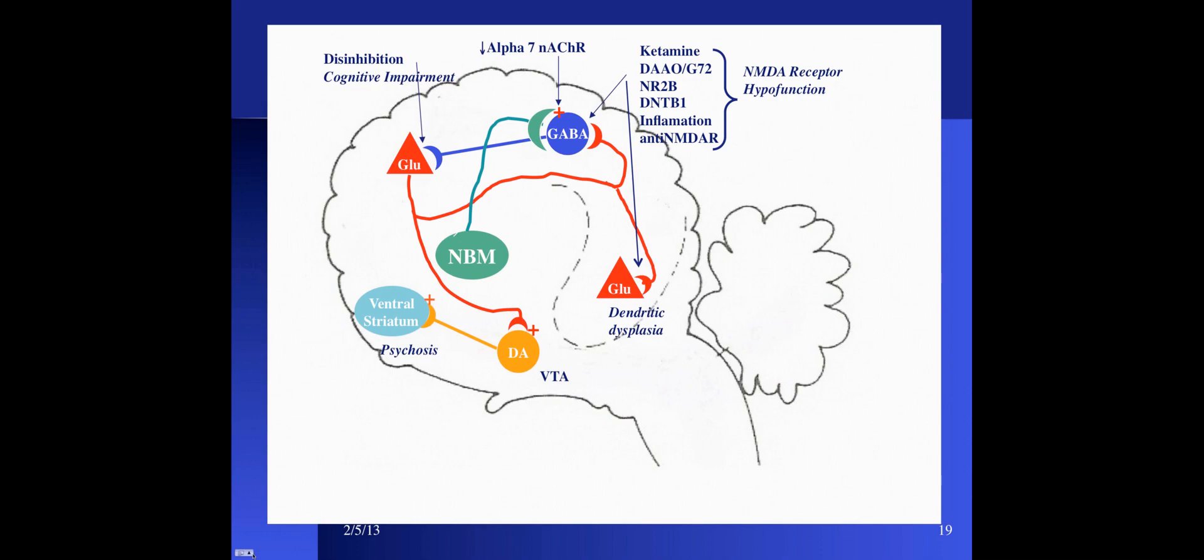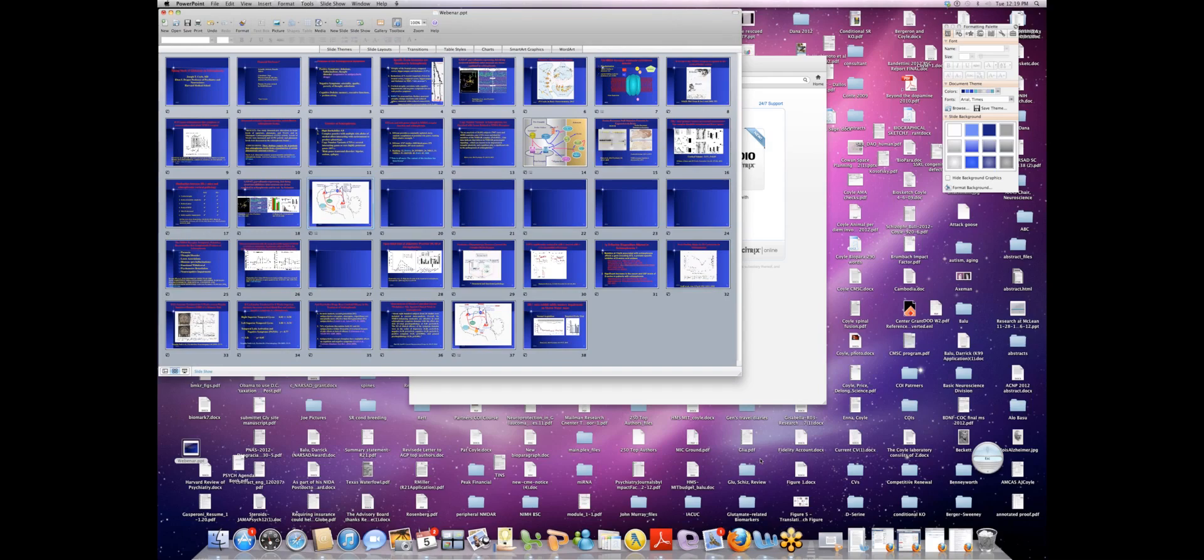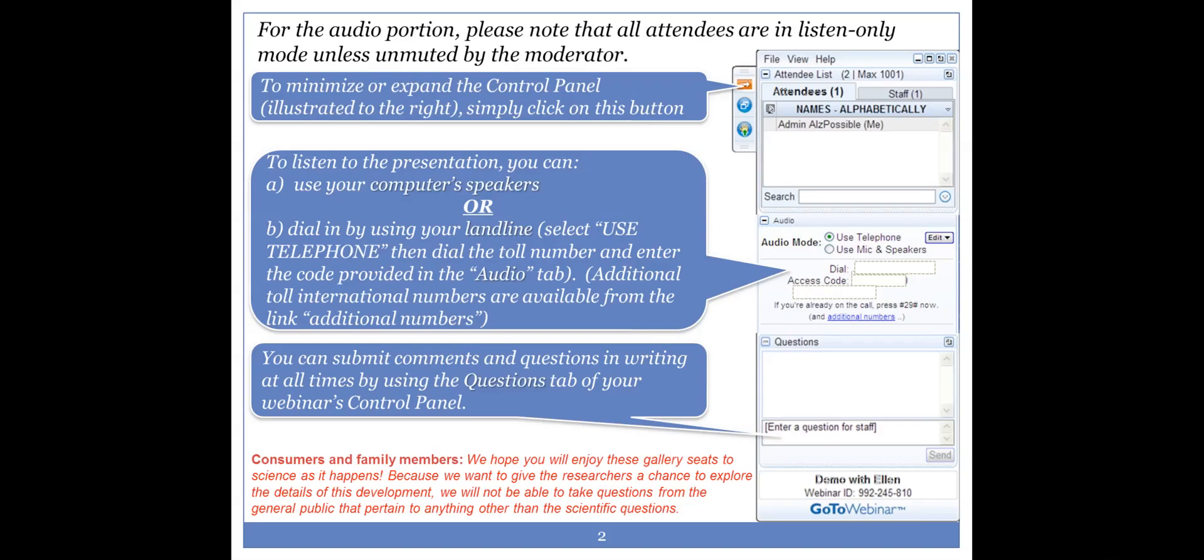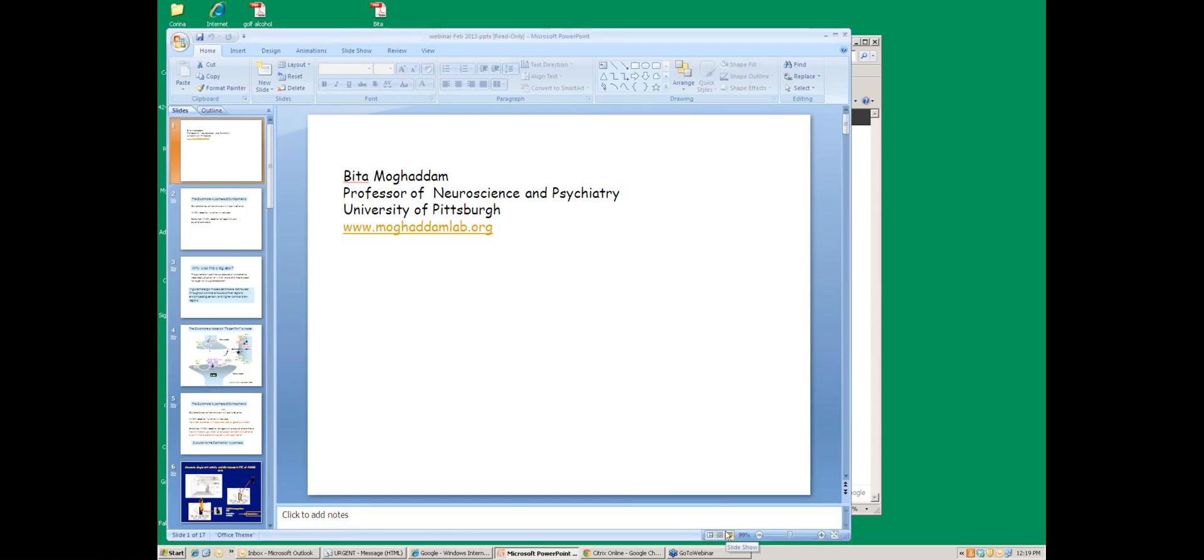There's a variety of ways you can get NMDA receptor hypofunction. Pharmacologically with ketamine, in terms of risk genes reduced availability of D-serine, impairments in NMDA receptor function, presynaptic impairments in glutamatergic release with dysbindin. Patterson has shown that in the inflammation models of schizophrenia, you have reduced NMDA receptor function. And finally there's the autoimmune syndrome in which antibodies to NMDA receptor produce a schizophrenia-like syndrome. This hypofunction results in dendritic dysplasia as well as reduced activity of the GABAergic neurons resulting in disinhibition of the cortical pyramidal neurons. And finally, this disinhibition drives subcortical dopamine release and psychosis.